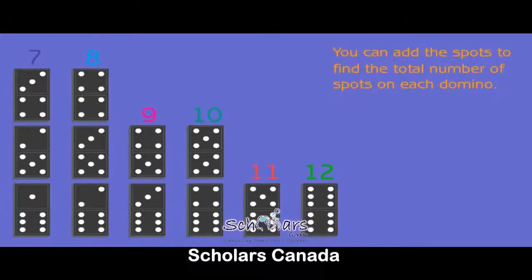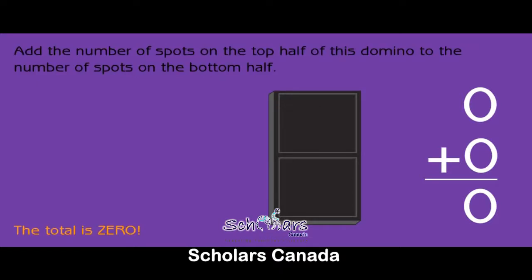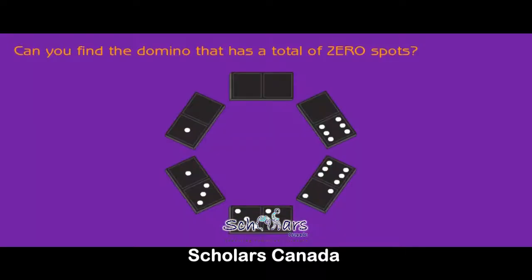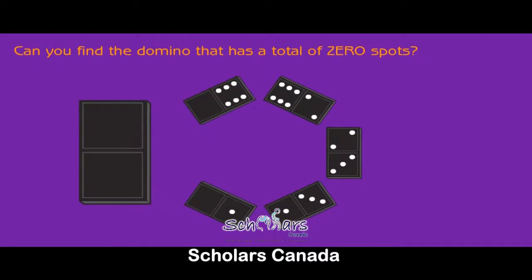You can add the spots to find the total number of spots on each domino. Add the number of spots on the top half of this domino to the number of spots on the bottom half. The total is zero. Zero plus zero equals zero. Can you find the domino that has a total of zero spots?